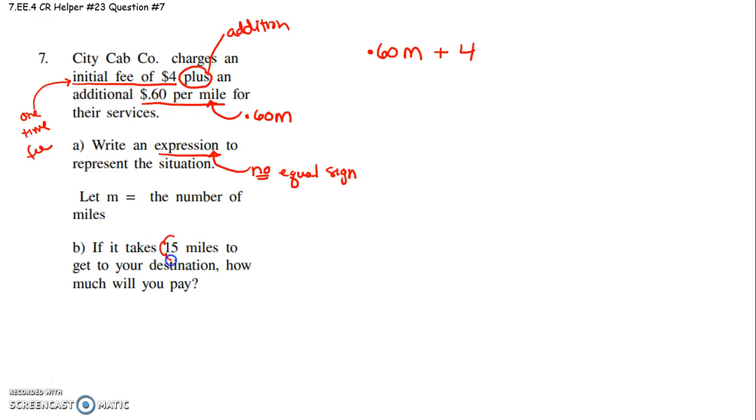If it takes 15 minutes, or I'm sorry, 15 miles, okay, good, because m represents miles, to get to your destination, how much will you pay? So, that means in place of m, that means .60 times 15 plus 4.